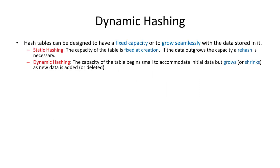In our previous video we were looking mostly at collisions and other ways to handle them, and prior to that we were looking at hash tables in a static hashing context. What we mean by that is at the beginning we set the size of our hash table to be some fixed size, usually calculated based on how much data we have or anticipate putting in the hash table.